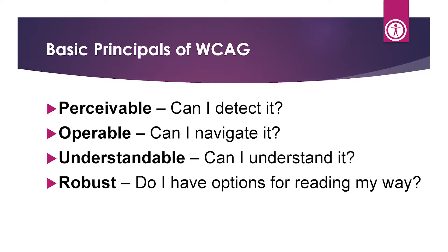The POUR principles are: Perceivable, Operable, Understandable, and Robust. Perceivable means: can I detect it? Can I see or access the information on the screen — the headers, paragraphs, images, footnotes? Operable means: can I navigate to it? Can I move from item to item? An eye tracker works more like a mouse, but almost every other assistive technology uses a keyboard trigger of some sort, which is why you hear so often that content must be keyboard accessible.